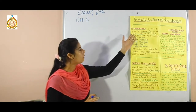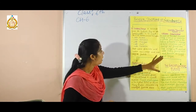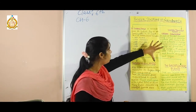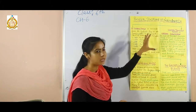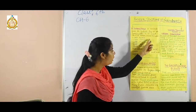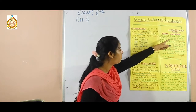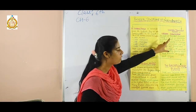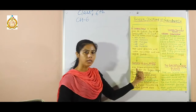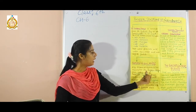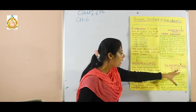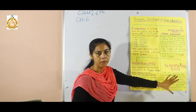The physical features of North America are divided into four parts. First is the Canadian Shield, second is the Western Mountain System or Western Cordillera, third is the Eastern Highlands, and fourth is the Great Central Plains.